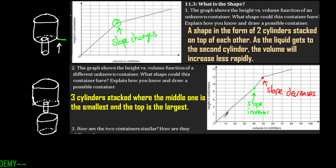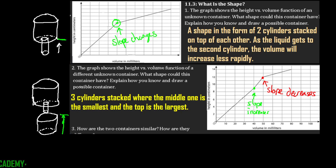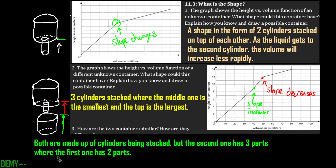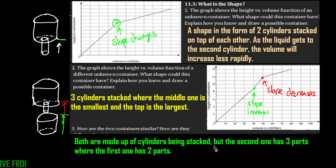For the last part of number three, it says how are the two containers similar and how are they different? Both are made up of cylinders being stacked, but the second one has three parts where the first one has two parts. Be able to tell what are some similarities and what are some differences.